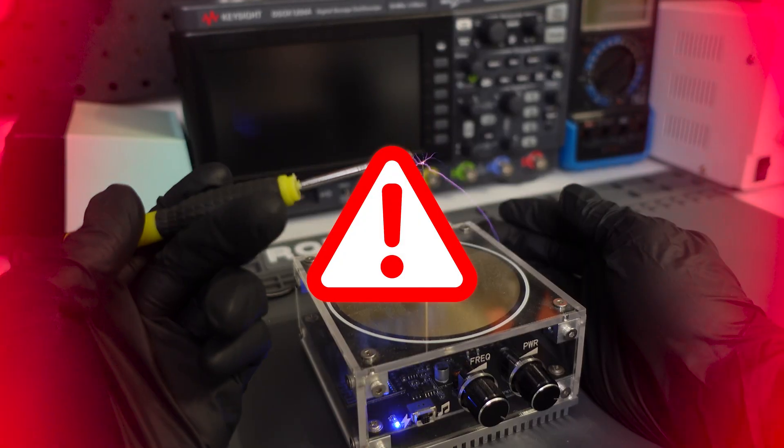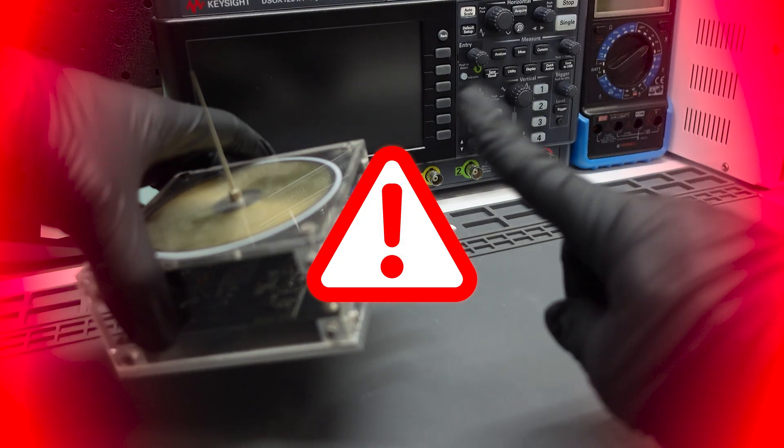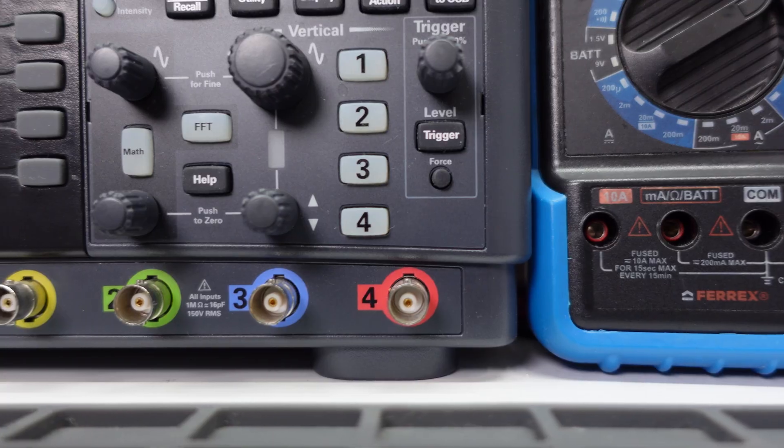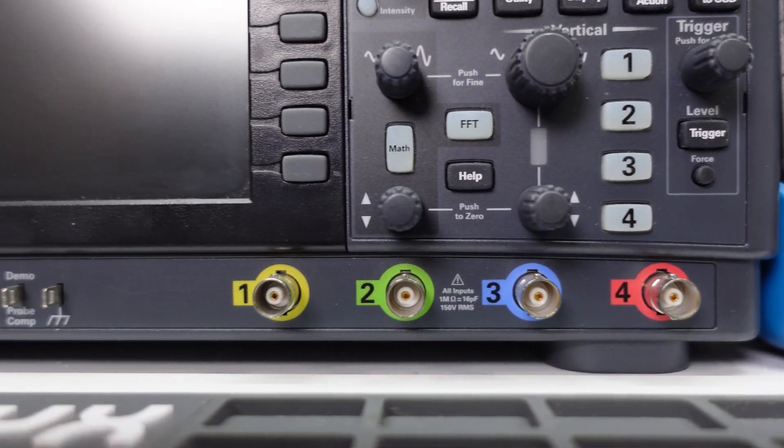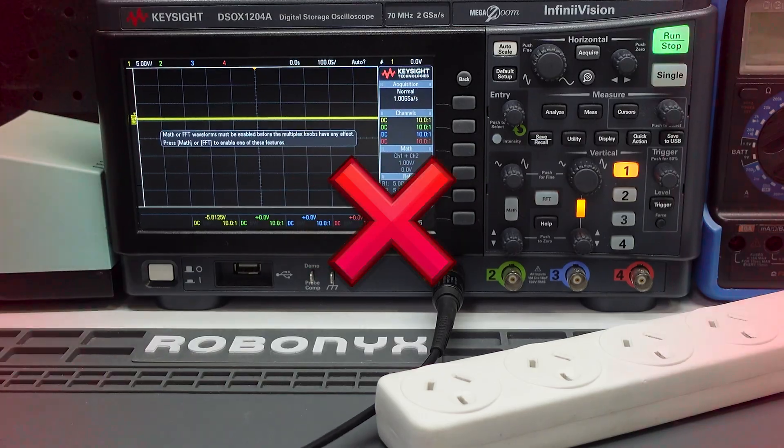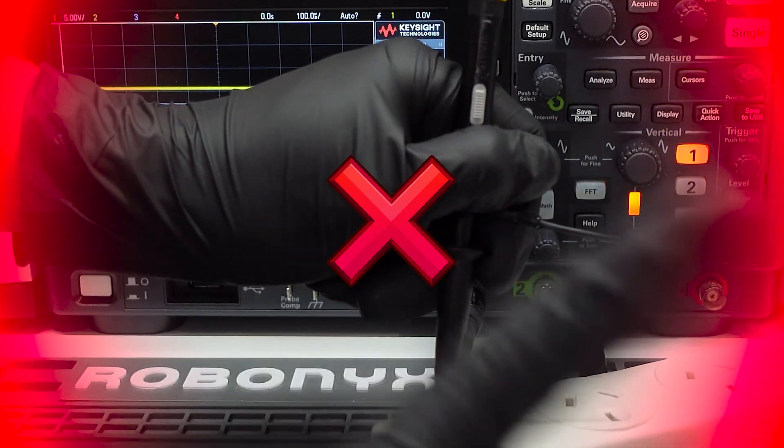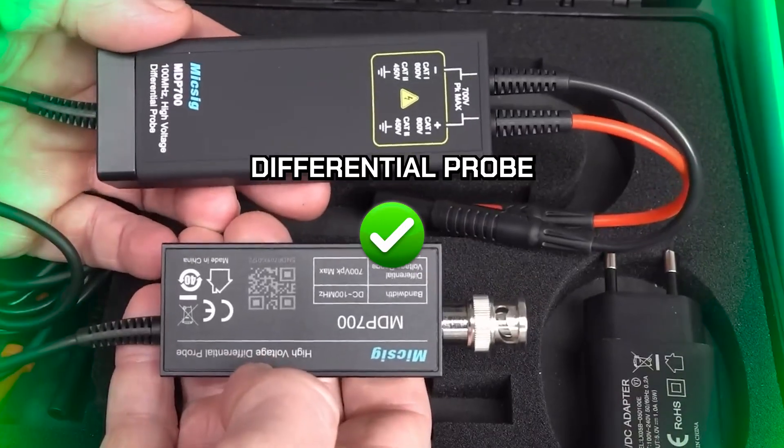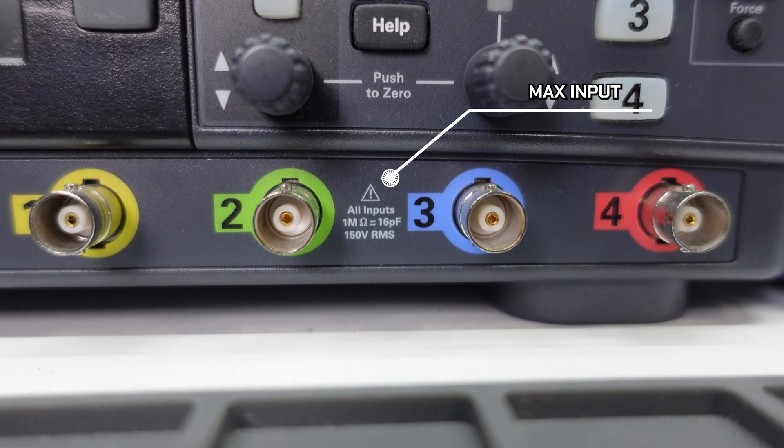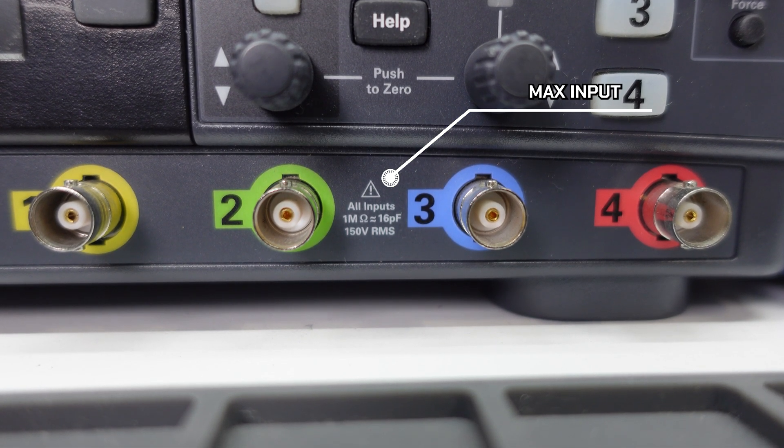After that, you want to be careful of high voltages. Oscilloscopes do not like high voltages, and if you exceed the voltage rating, you could permanently damage the input circuits. If you're measuring AC mains voltage, never connect your oscilloscope directly. Use a high voltage differential probe. If you look closely, most oscilloscopes will have a max input, and exceeding this can kill your scope.